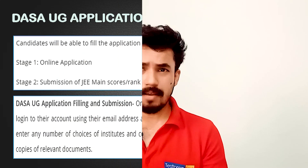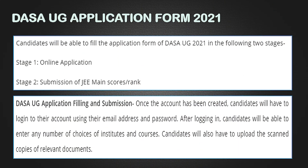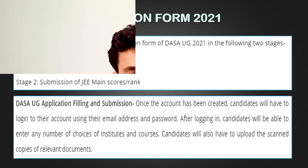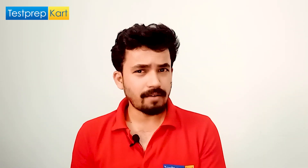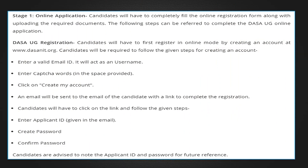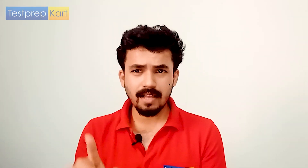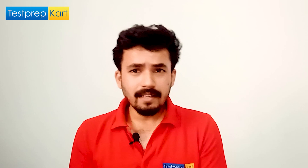Now let's discuss the application process. It's a two-step process. Step one is the online application — you just need to fill the online application form. Step two is submission of your JEE Mains scorecard or rank. The application form is simple: visit the DESA site, register by entering your valid email ID and username, complete a captcha, create your ID, confirm via email, then upload your Class 10 and 12 marks and other required documentation.